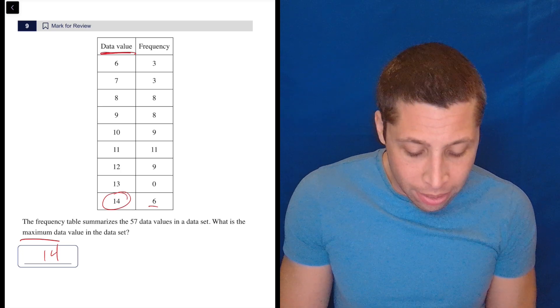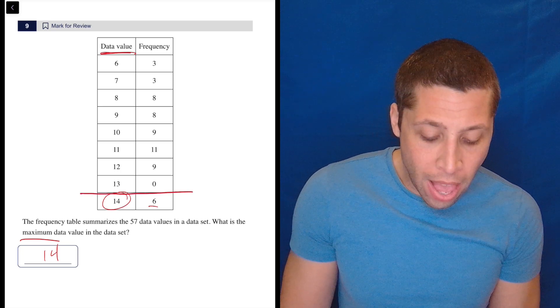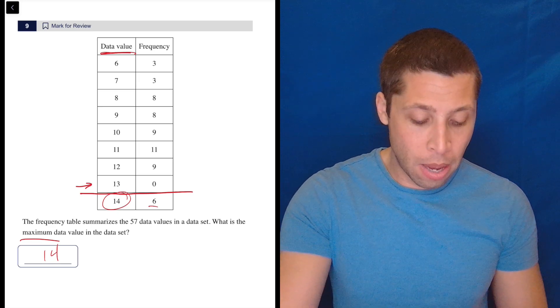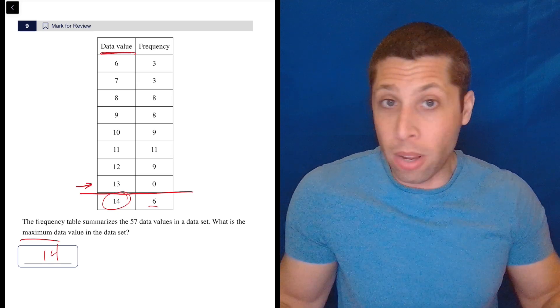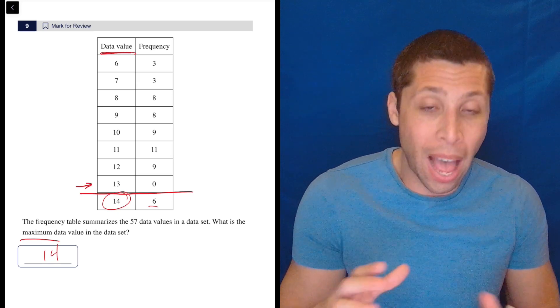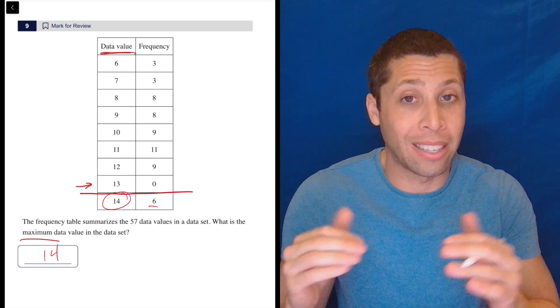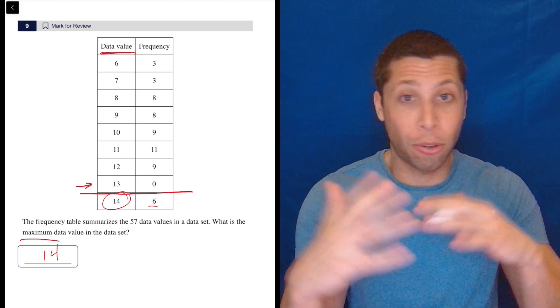So if the set cut off here, then we'd have a problem because then 13 looks like the maximum, but there's zero of them. So it's not the maximum. That's a trap. So that would be what happens if the set cuts off early, but it doesn't. So that trap is avoided.